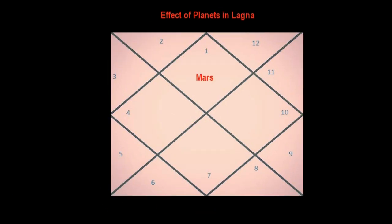Mars in lagna makes the native very strong and gives a very strong physique. The person would be having a strong, forceful personality. By nature one can be selfish.